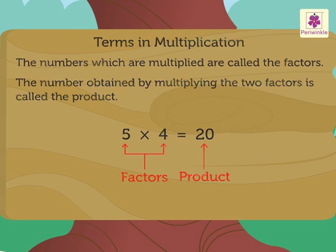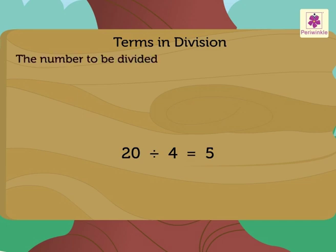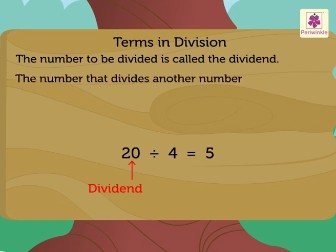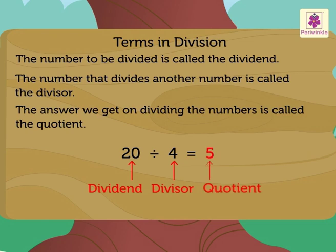Now, look at the division example. 20 divided by 4 is equal to 5. Here, the number to be divided is called the dividend. Here, number 20 is the dividend. The number that divides another number is called the divisor. The divisor here is number 4. Finally, the answer we get on dividing the numbers is called the quotient, which is number 5 here.